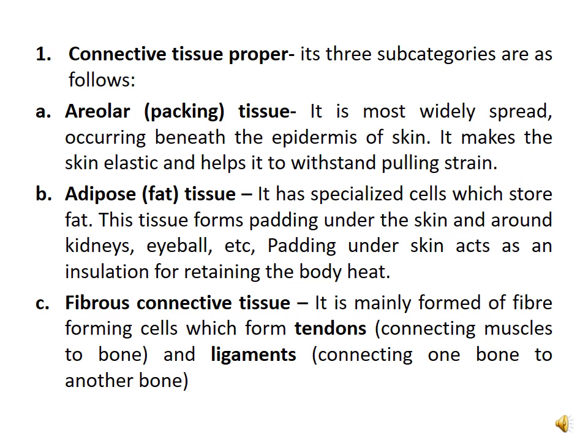Adipose tissue has specialized cells which store fats. This tissue forms padding under the skin and around the kidneys, eyeball, etc. Padding under the skin acts as insulation for retaining body heat. Our body temperature is maintained by adipose tissue — whenever required, fat will burn and produce heat to maintain the temperature, which is why it acts as an insulation substance.